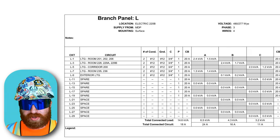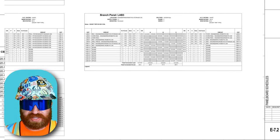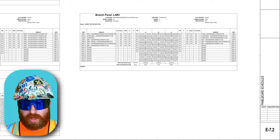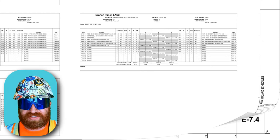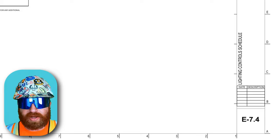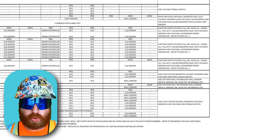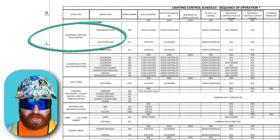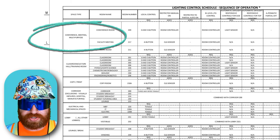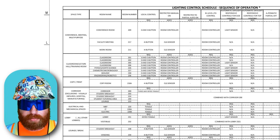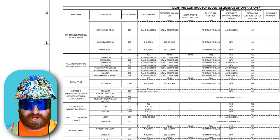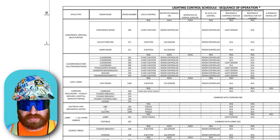E7.2, the next sheet, is the same with additional branch panels. Finally, on E7.4 we have our lighting control schedule. Right at the top of this page we see our conference room that we were originally looking at, which had those manual wall switches. This sheet explains how the switching is supposed to be set up and controlled in conjunction with the sensors in the space.